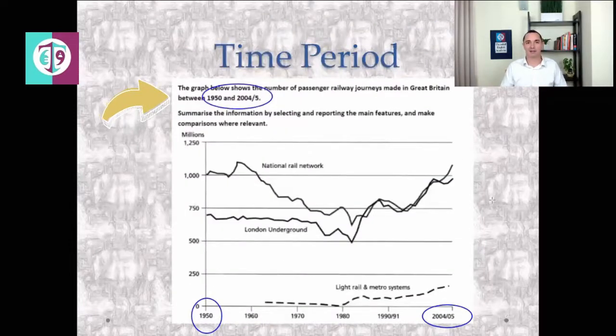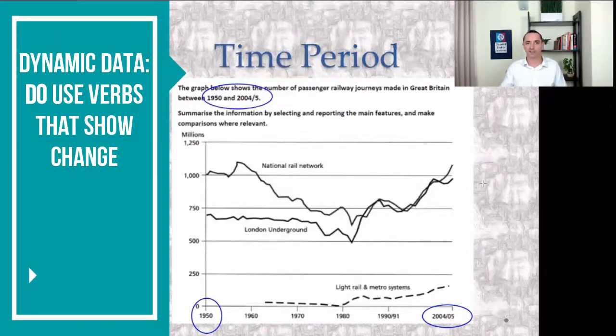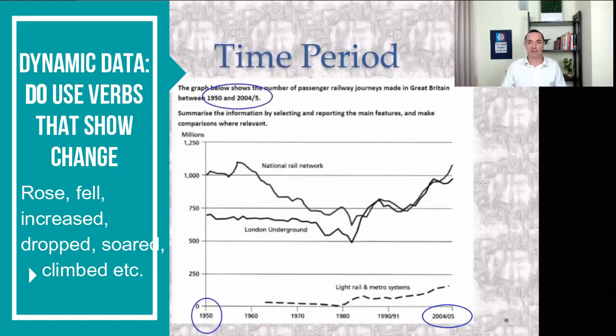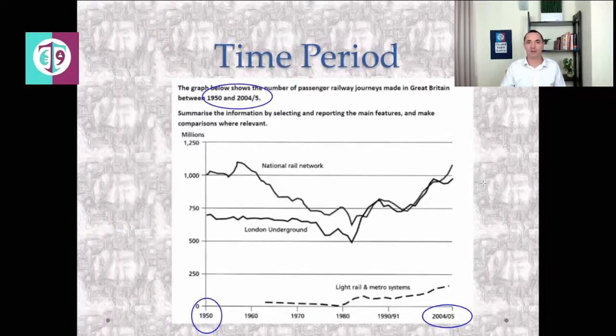Here we have a dynamic chart. So this does show change over time. You can use verbs that show change: grew, fell, increased, declined. But you need to be careful about the time period. Is it in the past? Is it in the present? Is it in the future? And use your verbs correctly.